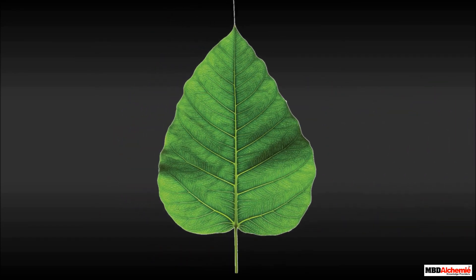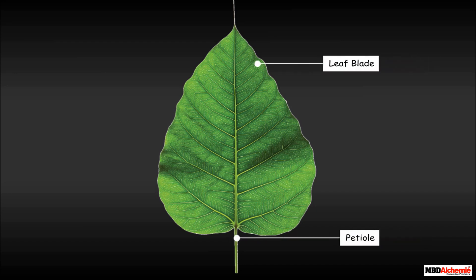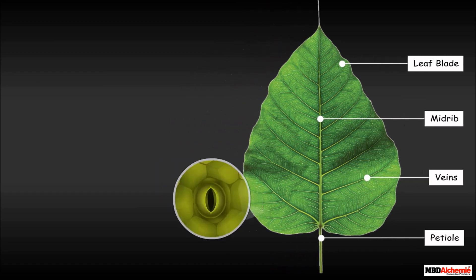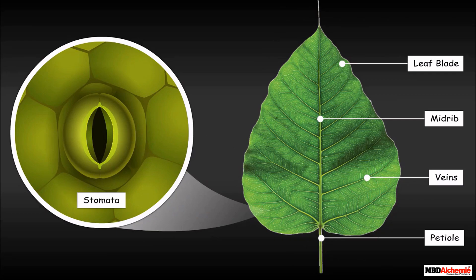A leaf is made up of different parts. These are the leaf blade, petiole, midrib, veins, and stomata. Let us learn about each of them one by one.